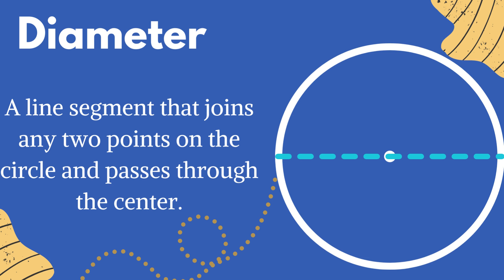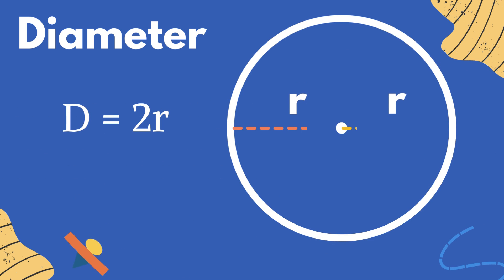Diameter. A line segment that joins any two points on the circle and passes through the center is known as diameter. It is denoted by d and is equal to 2 multiplied by radius.